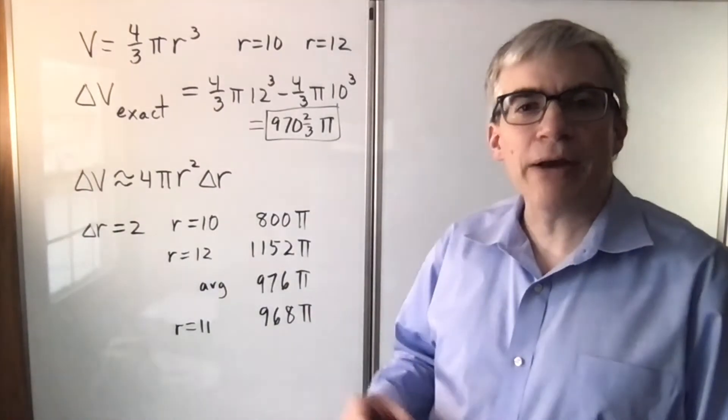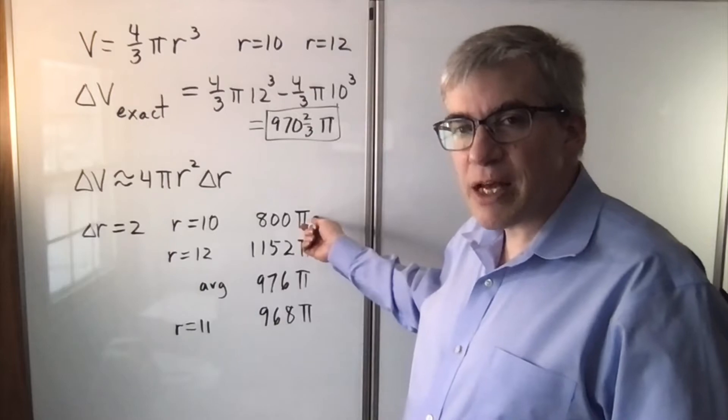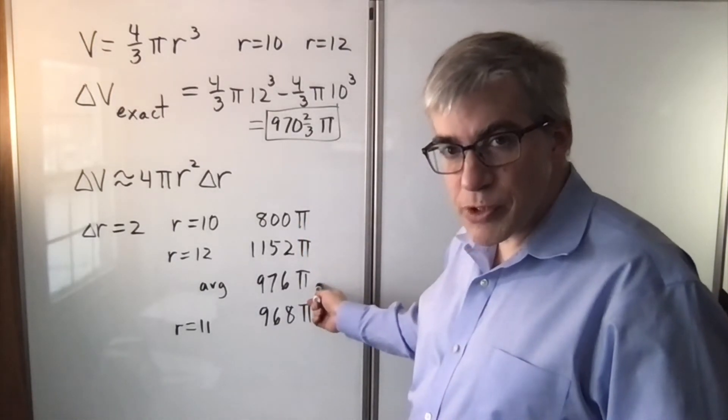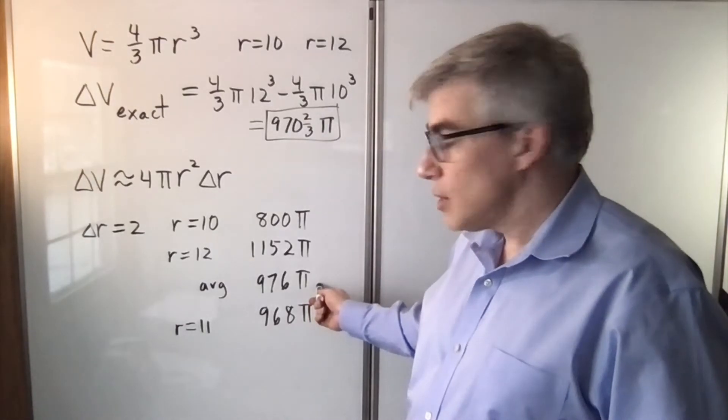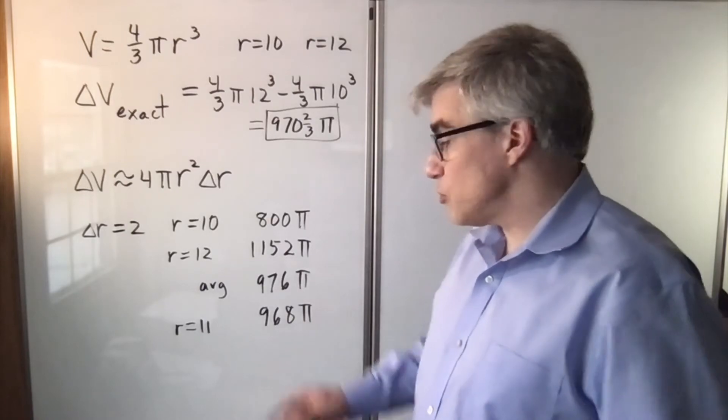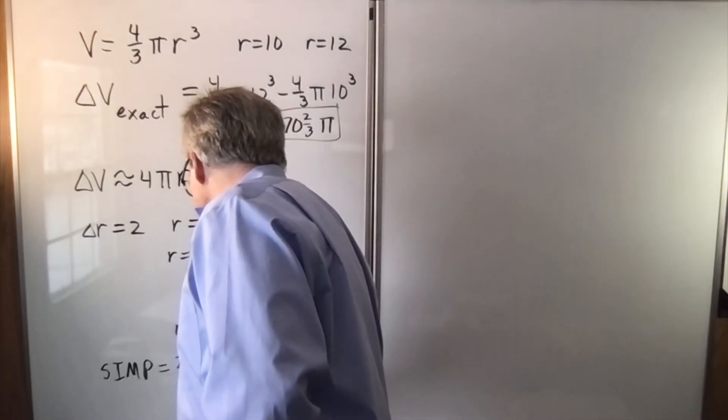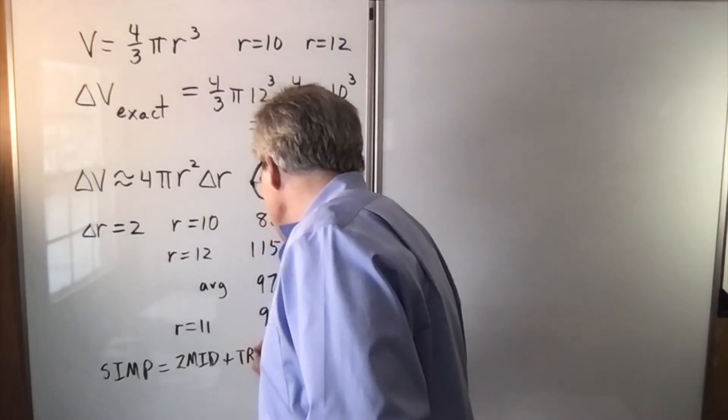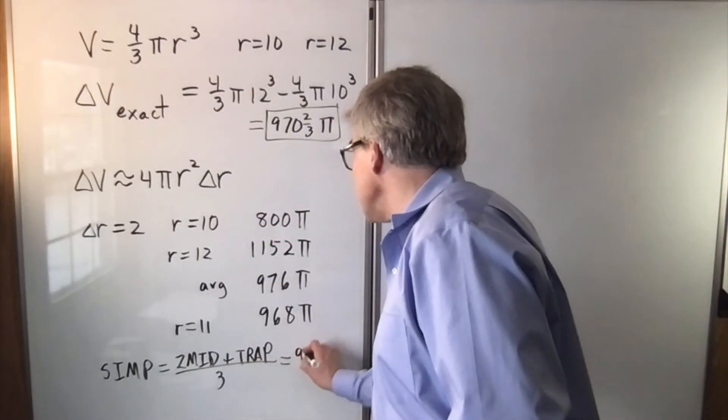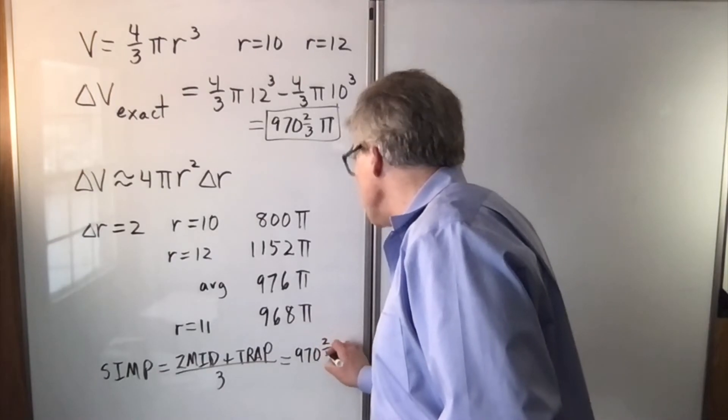And you might notice the pattern. This is like a left-hand sum. This is like a right-hand sum. Averaging them gives you the trapezoid rule. This is like the midpoint rule. So if we wanted to take Simpson's rule, that's two parts midpoint and one part trapezoid over three, we end up with exactly 970 and 2 thirds pi.